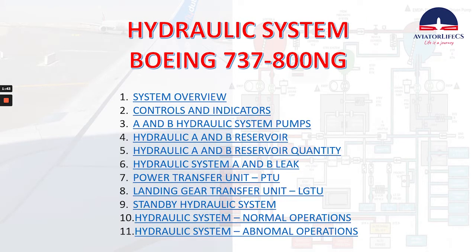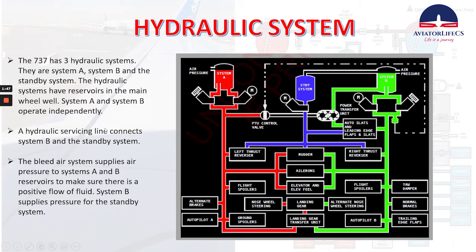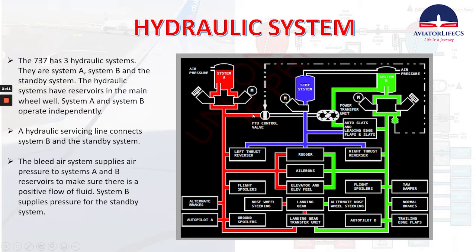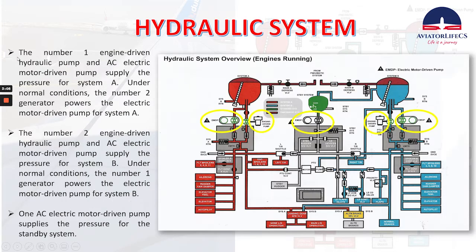Let's start talking about the hydraulic system overview. The 737 has three hydraulic systems: system A, system B, and the standby system. The hydraulic systems have a reservoir in the main wheel well. System A and system B operate independently. A hydraulic servicing line connects system B and the standby system. The bleed air system supplies air pressure to systems A and B reservoir, to make sure there is a positive flow of fluid.